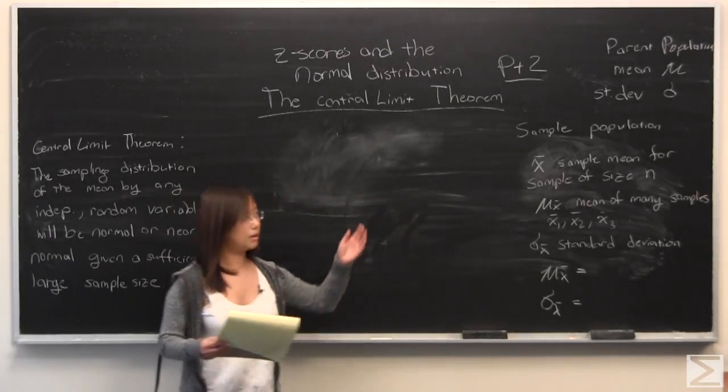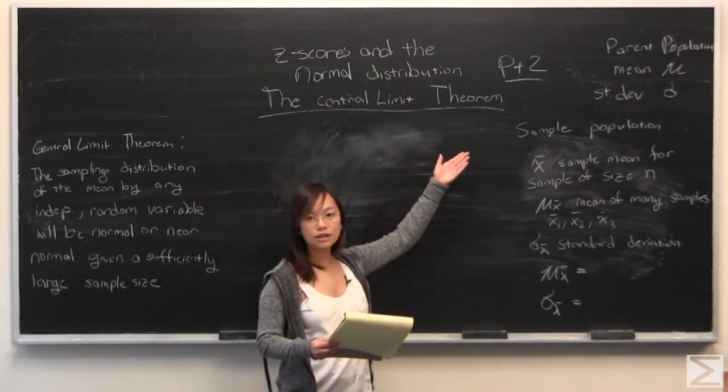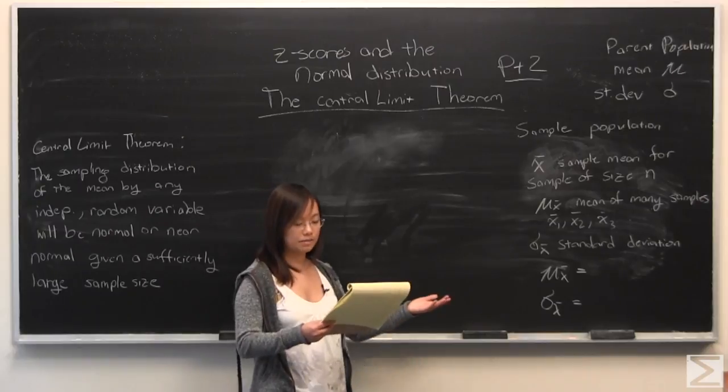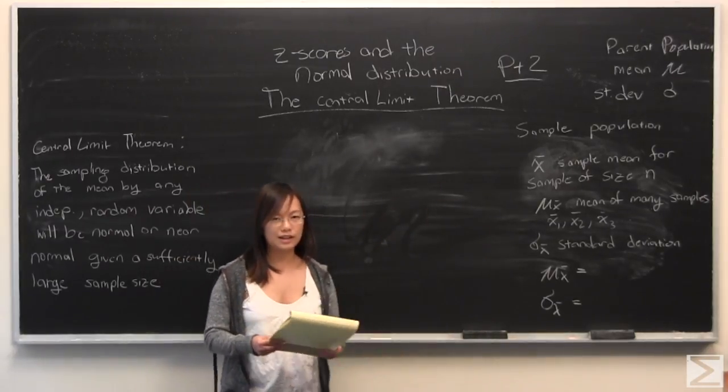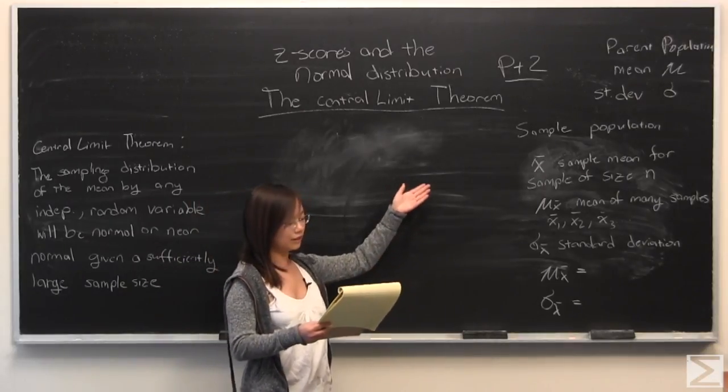Well, suppose you have a parent population, which I've written up there. It has a mean of mu and a standard deviation of sigma. If you take a sample from this, it would have to be fairly large. But we can also apply this for not necessarily fairly large things, and it still is useful. But if you took a fairly large sample size...